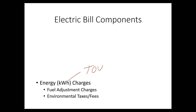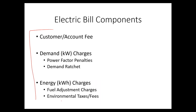To compare: if you use energy at midnight, you might pay one price, and it might be five times more expensive to use the same amount of energy at 4 o'clock in the afternoon. That's the time of use component of kilowatt-hours. That's a summary of the three major components of most electric bills around the world. Hope you enjoyed it, and we'll catch you next time.